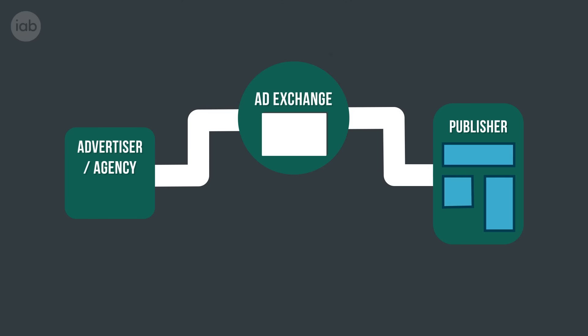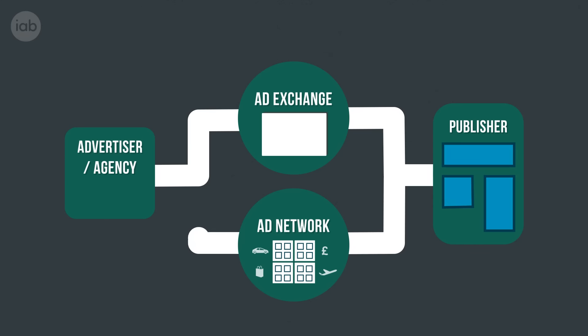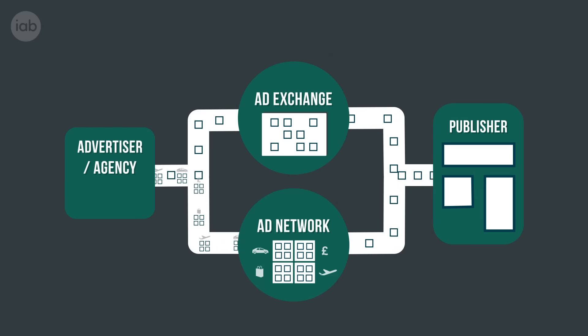The winner of the bid could now have their ad in front of the right audience at the right time. So impressions could now be bought in two ways: the Ad Network, where inventory was aggregated and packaged up, and the Ad Exchange, where there was the opportunity to buy a specific audience.